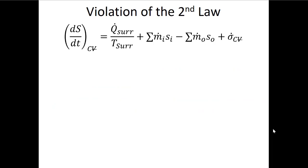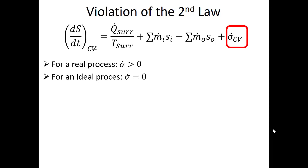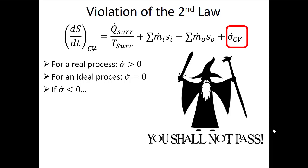What does a violation of the second law look like? The key component is the entropy generation rate. For a real process, entropy generation must be happening, so the entropy generation rate must be positive. For an ideal process, the best we can ever hope to approach — but not actually equal — is zero entropy generation. We can't quite get there, but maybe we're generating entropy at a very small rate. If entropy generation is negative, then the process can't happen in the universe.